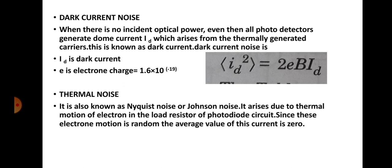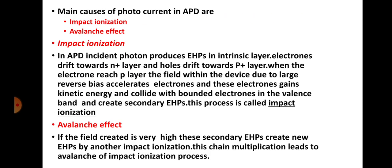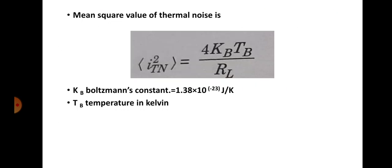Thermal noise is produced due to the movement of electrons in the load resistor connected to the external circuit of the avalanche photodiode. The mean square value of thermal noise is given by i_tn² = 4k_B · T_B / R_L, where k_B is Boltzmann's constant with value 1.38 × 10⁻²³ J/K, T_B is the temperature in Kelvin, and R_L is the load resistance. That concludes this session.